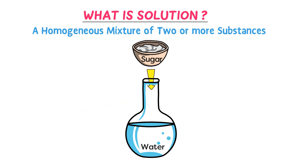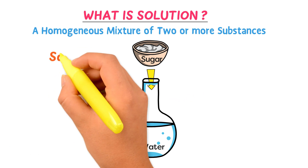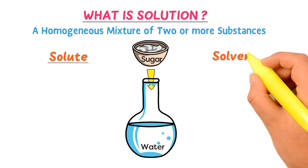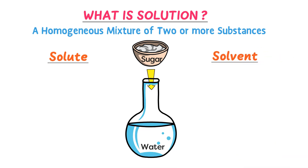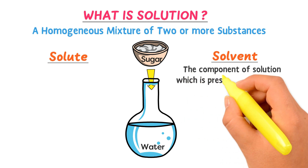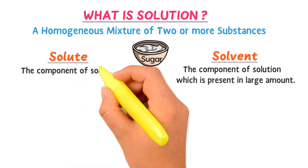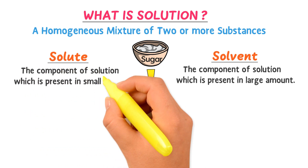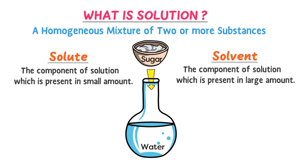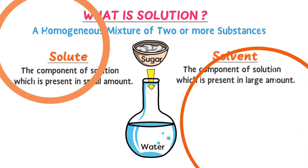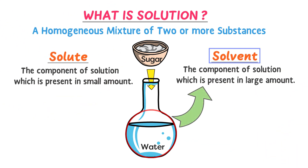Usually, a solution is made up of two components: solute and solvent. Solvent is the component of a solution which is present in large amount, while solute is the component which is present in small amount. For example, in this solution, water is the solvent and sugar is the solute.